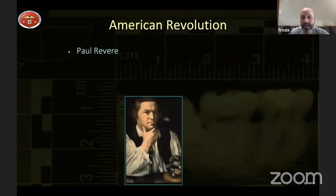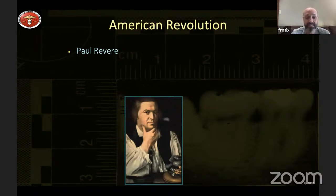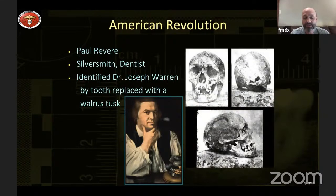Going back a step in history — Paul Revere was actually a dentist and a silversmith, and a lot of earlier fillings were made of silver and different metals. He was able to identify a doctor by a walrus tusk tooth replacement he had done. And looking at this skull, you can see holes — one under the left eye and one on the back of the skull — indicating a gunshot wound, likely a musket shot, with the smaller hole being the entrance wound and the larger being the exit wound.